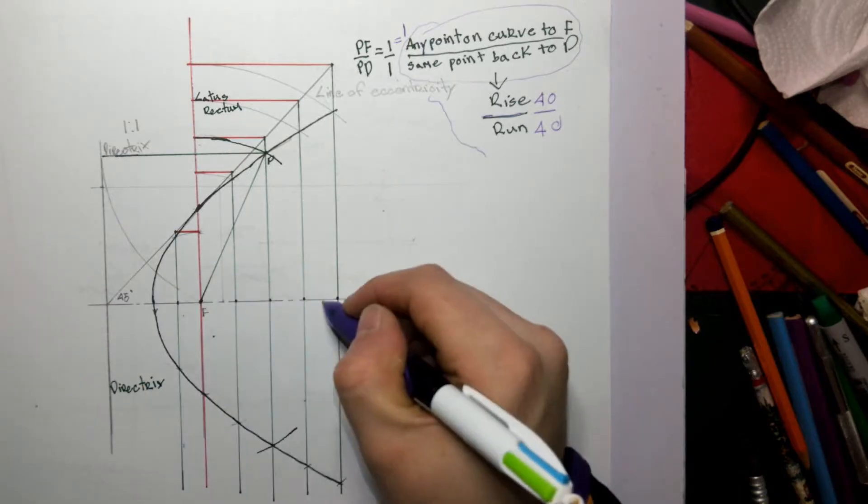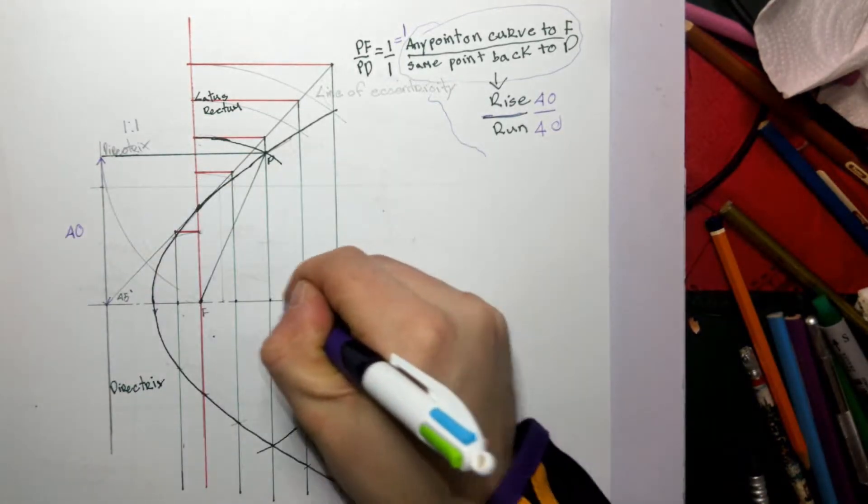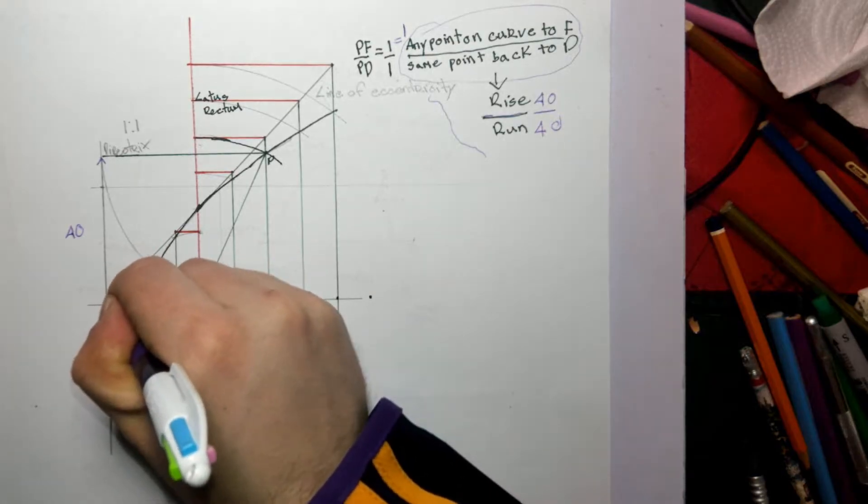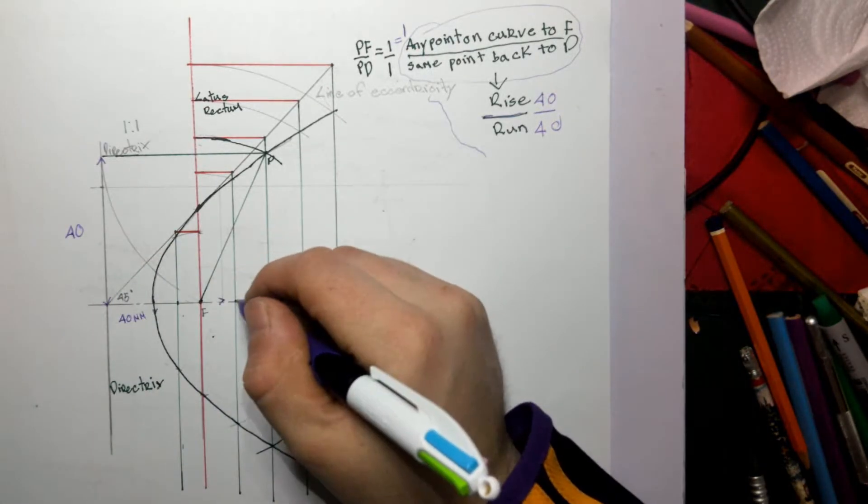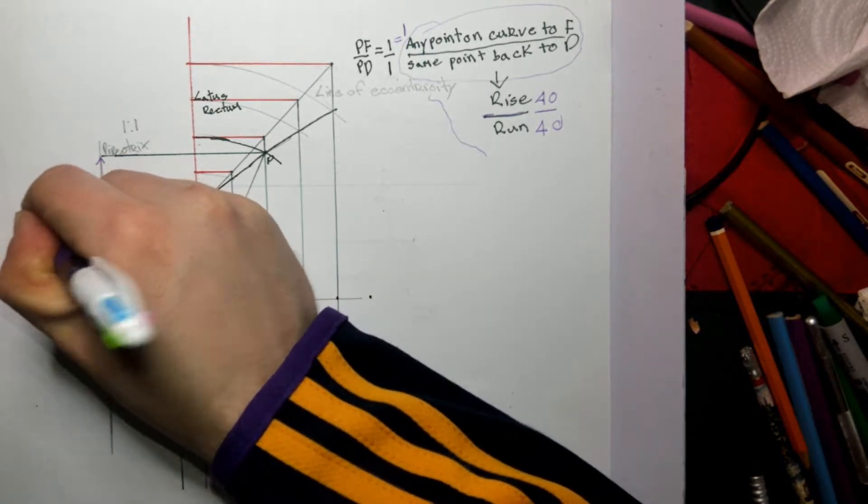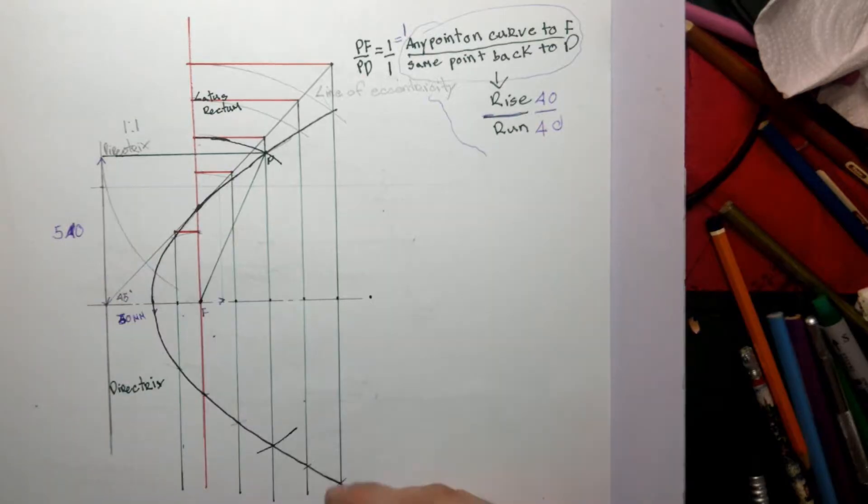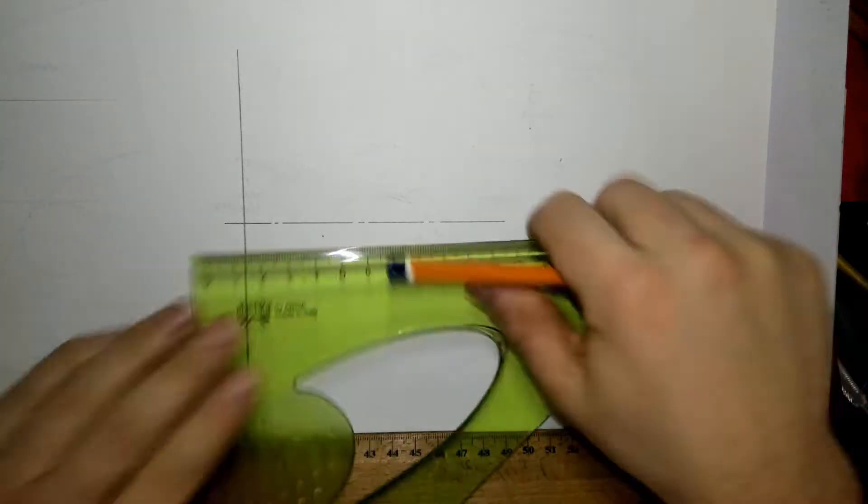So the rise is forty and then the run is forty millimeters as well. Or actually I think I've done that fifty, so I've done that actually fifty. So I'll start actually drawing that now so I can show you how to draw a parabola using the eccentricity method.